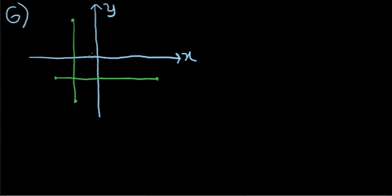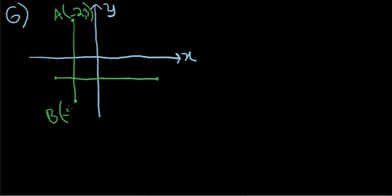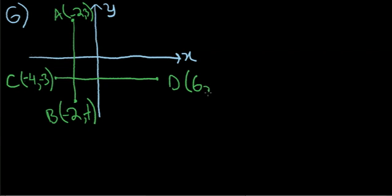So this is point A at negative 2, 3. This is point B at negative 2 and an unknown T. This is point C at 6 and negative 3. The question says in the figure above, AB equals CD. What is the value of T?